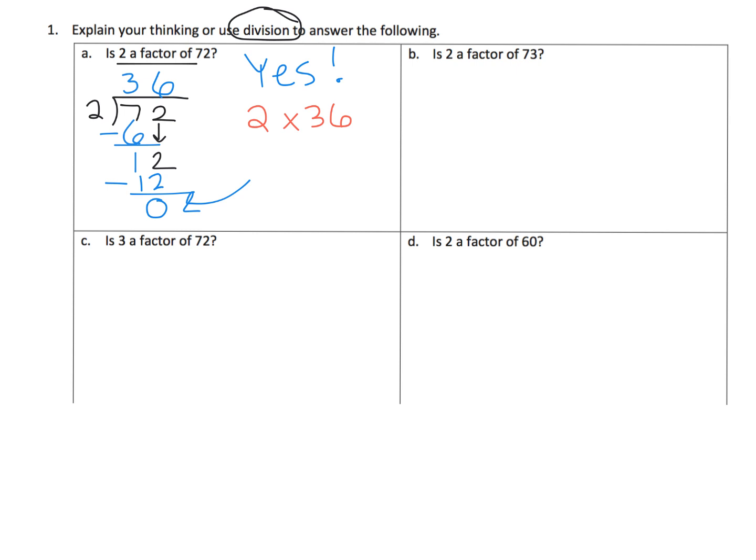Anyway, 2 times 36 is 72. So that means both 2 and 36 are factors of 72. And the idea is we could do that with any of these problems. Just use simple division.